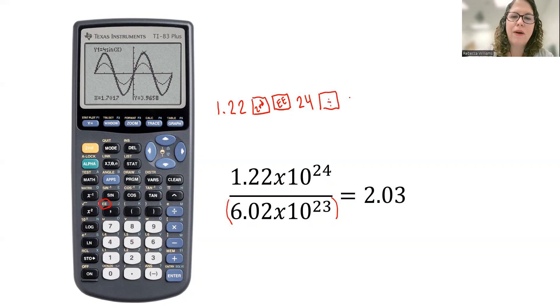And now I'm going to hit the divided by button and put the 6.02. I'm going to hit second and then the EE function again. And then 23rd. When you put that into your calculator, you're going to get the correct answer.